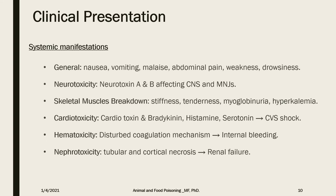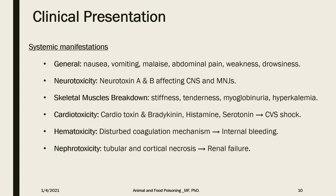Regarding systemic manifestations, general symptoms include nausea, vomiting, malaise, abdominal pain, weakness, and sometimes alteration of conscious level. Neurotoxic manifestations are caused by neurotoxins A and B affecting the central nervous system and the neuromuscular junctions.